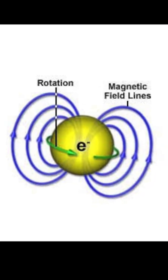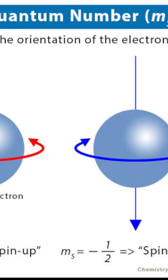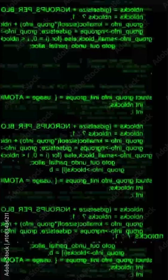3. Spin as information. Particles like electrons have a property called spin, up or down. Quantum computers use this spin to represent and process information.